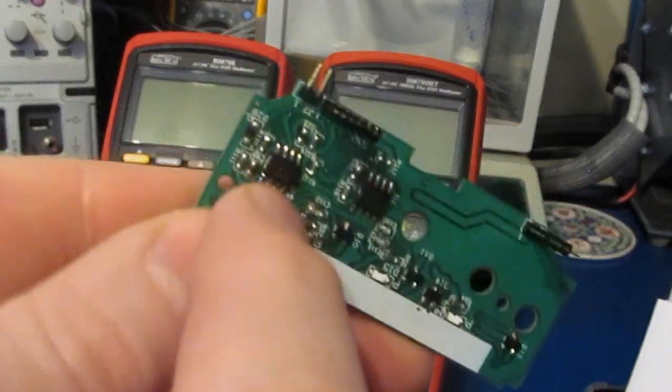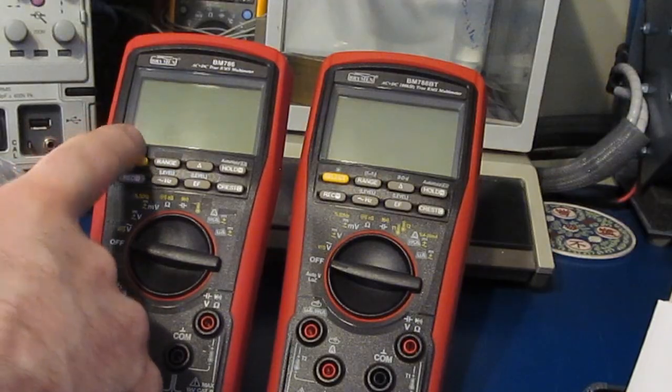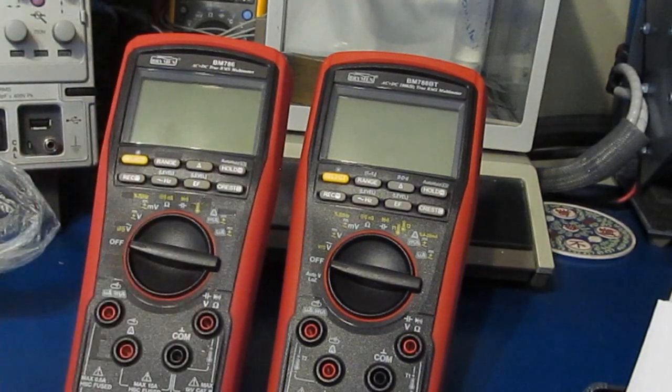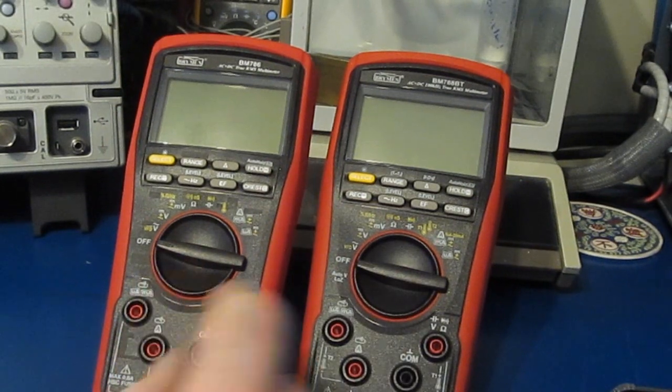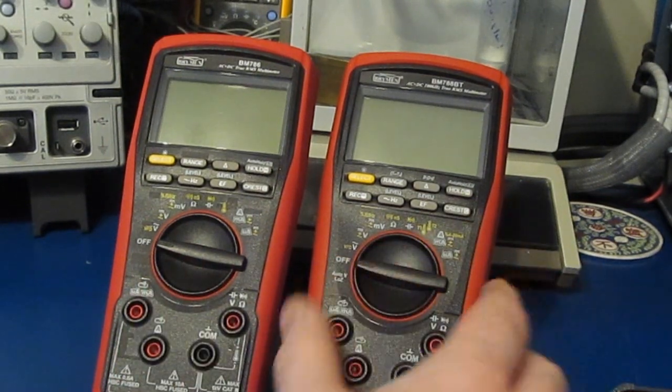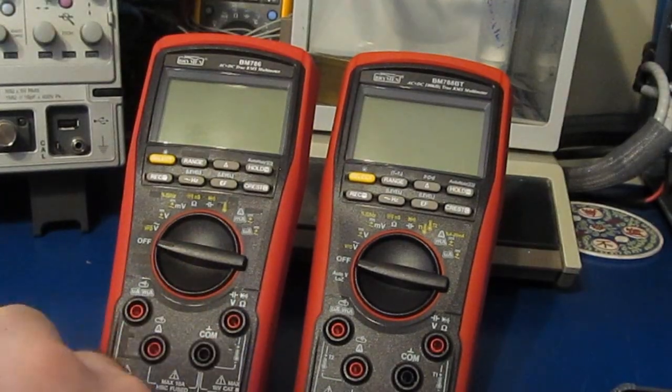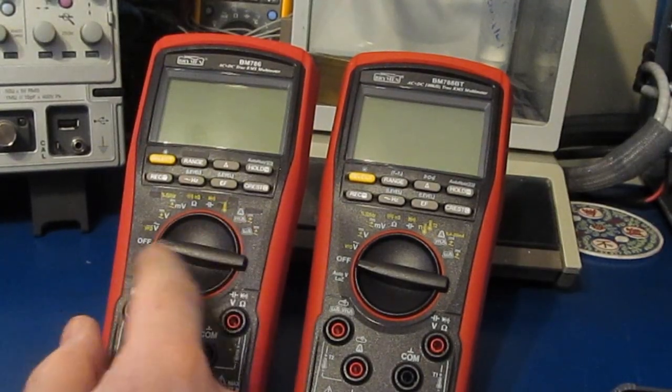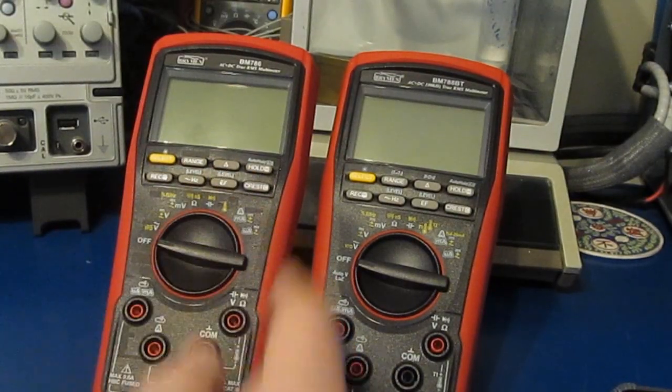Now of course I knew that was going to cause problems with this meter. So this has a separate RMS to DC converter which this meter does not have. So I knew anything that required the AC voltage measurement wouldn't work, but I expected basically the rest of it to kind of work.